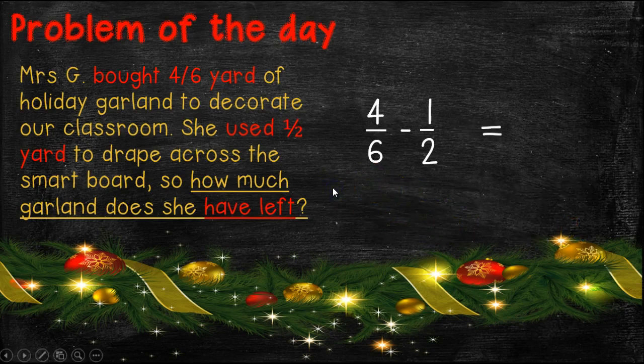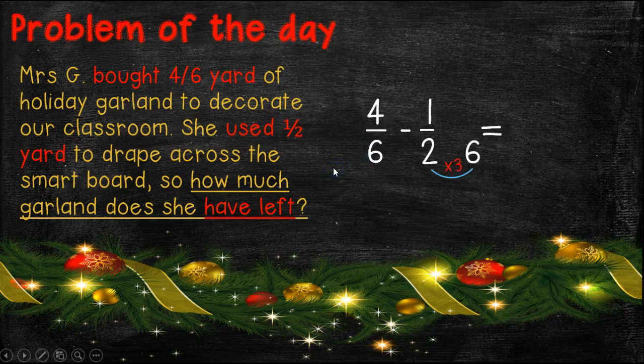So now we just have to change the one half because this one already has 6 as the denominator. So we have to think, what do we do to a 2 to get it to 6? Well, here we'll multiply by 3. Whatever we do to the denominator, we have to do to the numerator too.